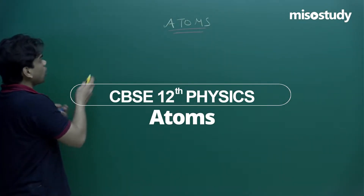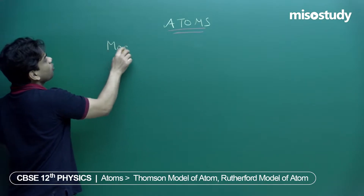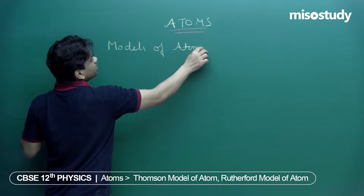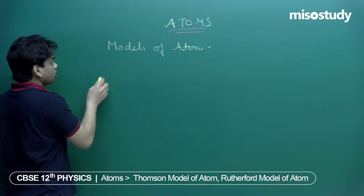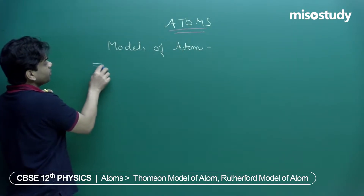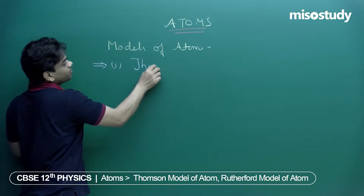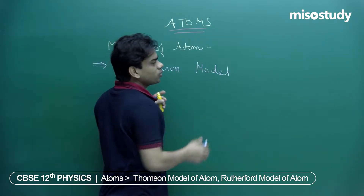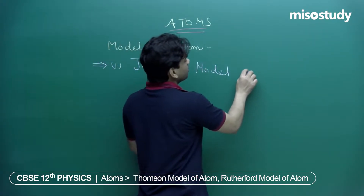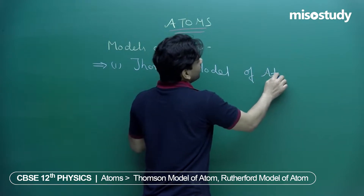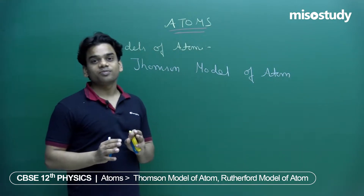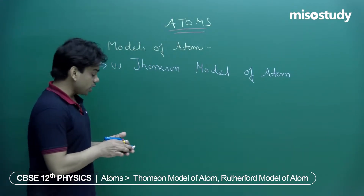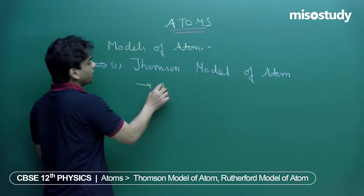We will start with the very basic model of atoms — the Thomson model. Thomson actually gave a hypothesis. He knew that an atom has both negatively and positively charged particles within it. His model was actually a plum pudding model.